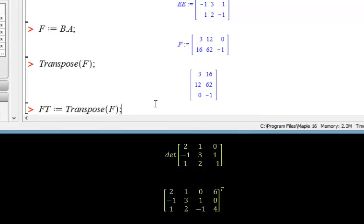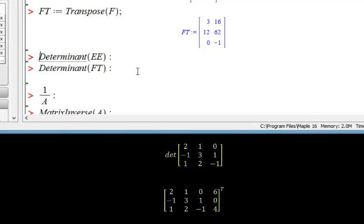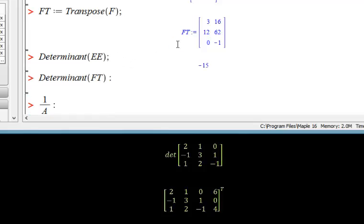You can find the determinant by just issuing the determinant command. In this case I'm finding the determinant of a square matrix which is going to be -15. Notice that determinants are only calculated for the square matrices.